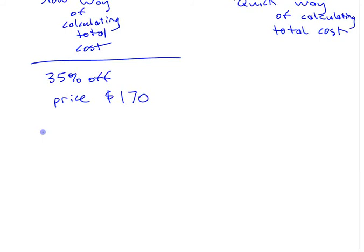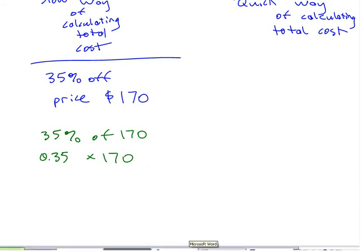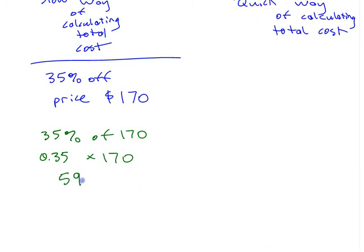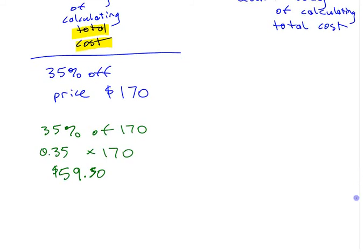Here's the slow way. You need to figure out what 35% is first: 35% of $170 equals 0.35 times $170. That number is called the discount. That discount amount is $59.50.